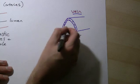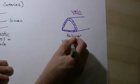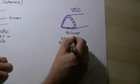And the lumen, the space in the middle, is much smaller. Crucially, veins will have valves in them. The point of the valves is to stop blood flowing backwards.